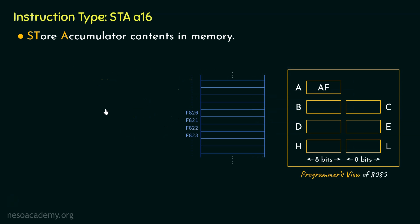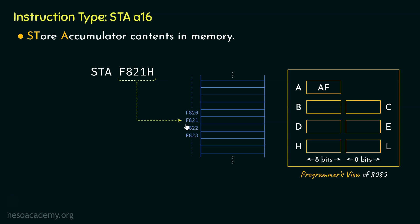Let me explain the functionality using an example. Say within the accumulator register we have got the value AF, and our intention is to store that value in the memory location F821. If the microprocessor executes the instruction STA F821, since we are sending the address directly to the microprocessor through the instruction, using this address portion the microprocessor will be able to point directly to the location in memory. And once the entire instruction is executed, the content of the accumulator — that is AF — is going to be stored in that particular memory location. So remember, STA A16 stores the content of the accumulator within the memory location specified by the A16 part, and this is a 3-byte long instruction just like LDA A16.